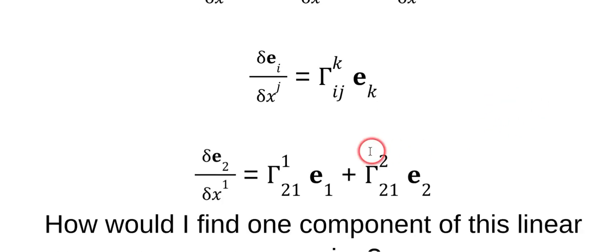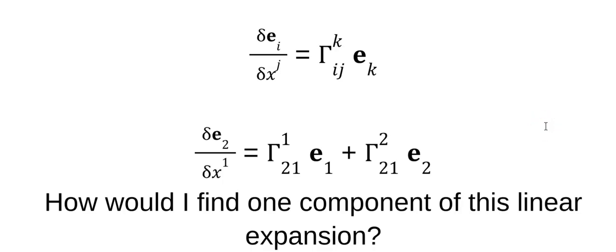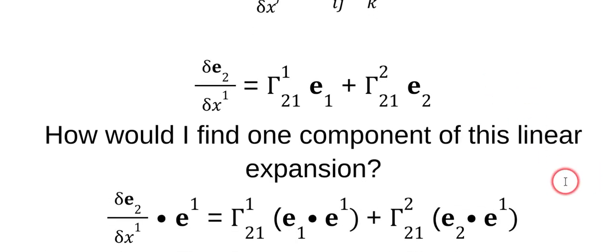Now what if you wanted to find just one part of this, of any vector? Remember, what you can do is multiply it by the dot product of a basis vector. In this case we're going to use a contravariant basis vector. So we dot product both sides, and we get this expression.